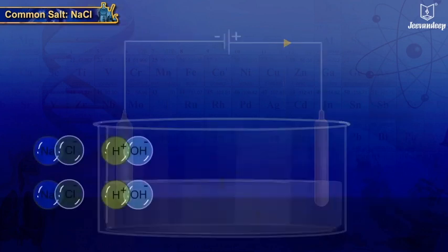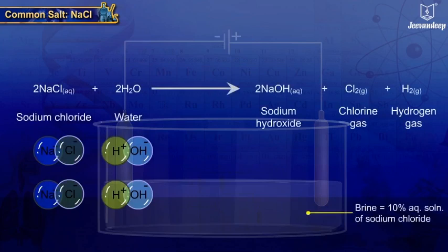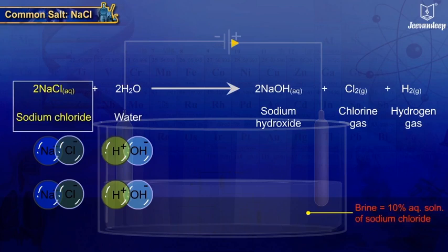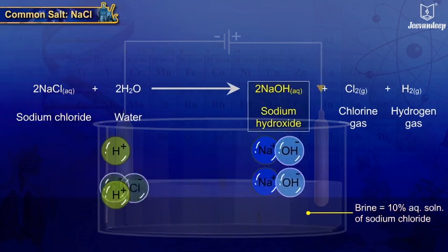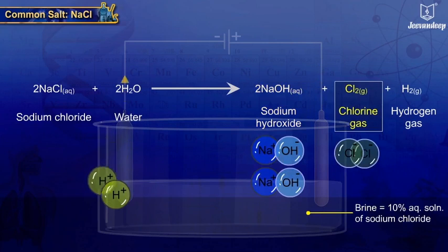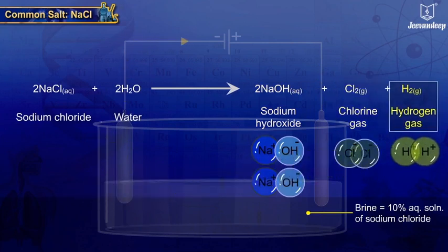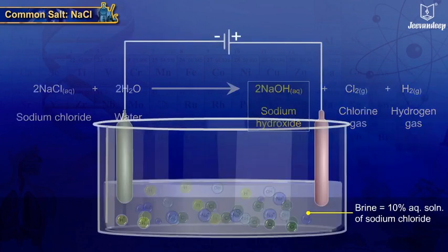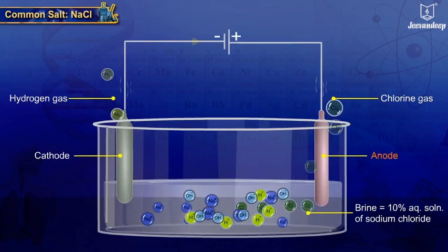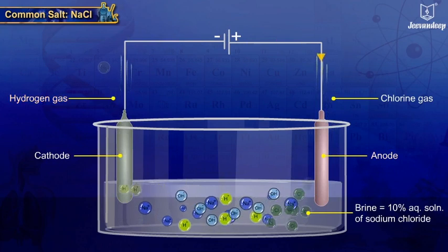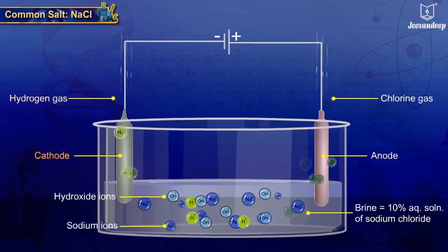When electricity is passed through 10% aqueous solution of sodium chloride, known as brine, it decomposes to form sodium hydroxide. Chlorine gas is liberated at anode and hydrogen gas at cathode, respectively.